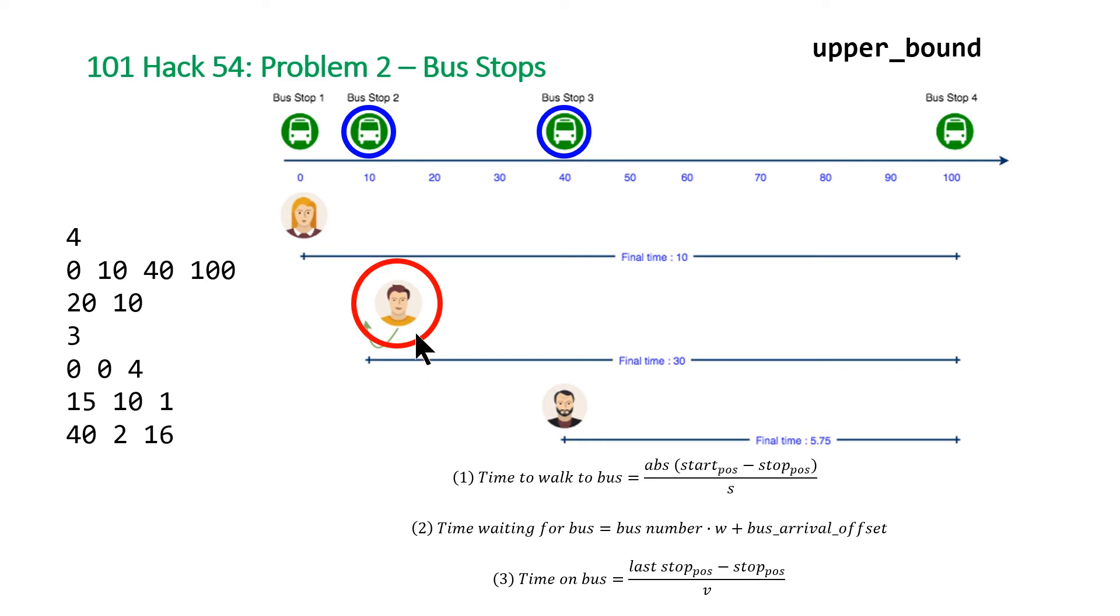At the very end once we've calculated both bus stops, we also need to calculate the time it would take for the individual just to walk to the end of the street, which for the third individual ends up being the optimal case. So once we have those three numbers we just take the minimum of those three and return it for each individual.